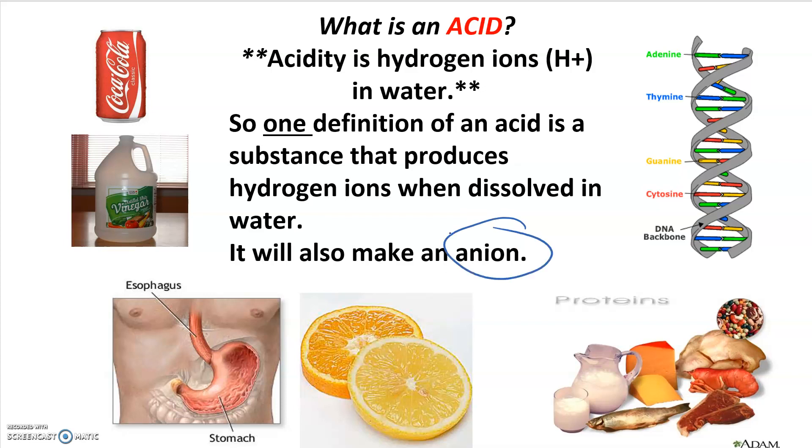Here are some examples of acids. Sodas especially cola which has acid added to it is an acid. Vinegar is an acid. We have acid in our stomach, hydrochloric acid. Citric acid and some other fruit acids are found in citrus fruits. Proteins are made of amino acids which we've already talked about. And DNA stands for deoxyribonucleic acid. So the A in DNA stands for acid.